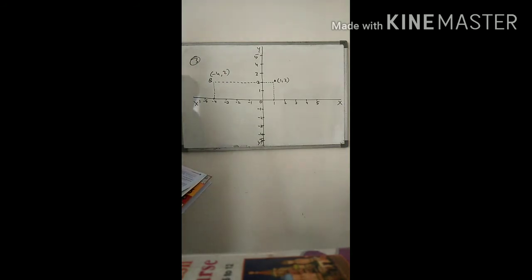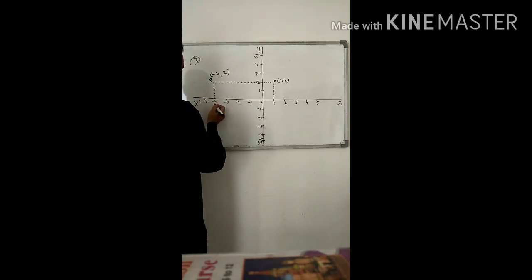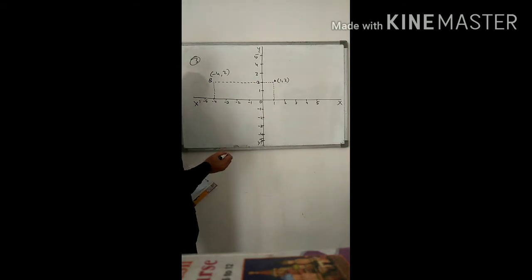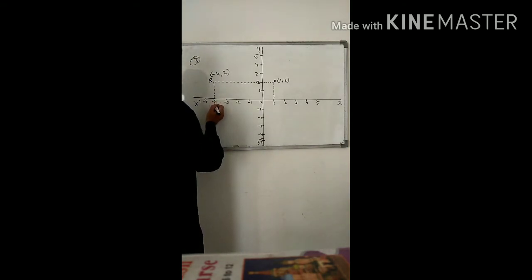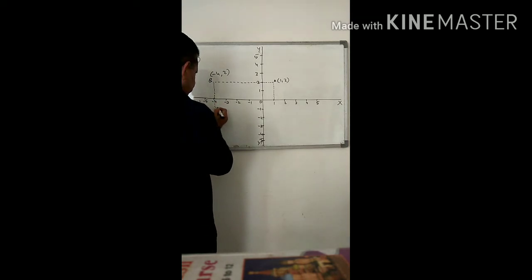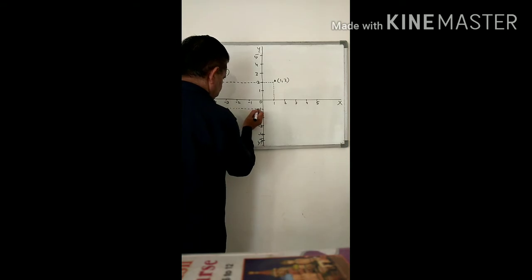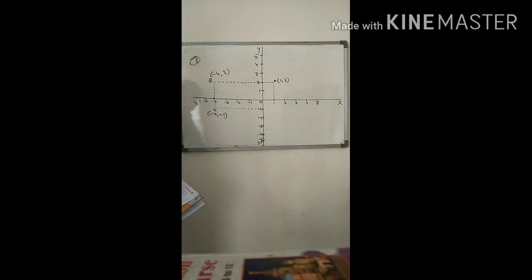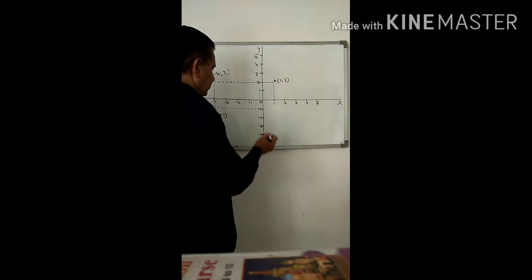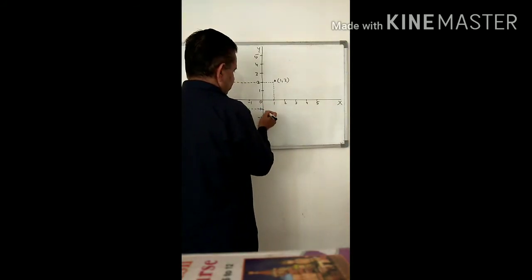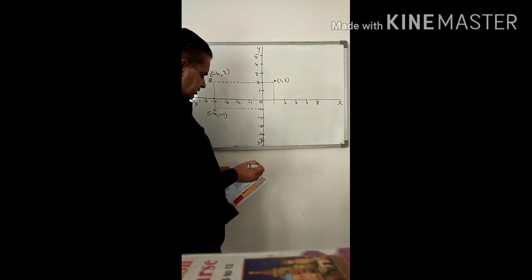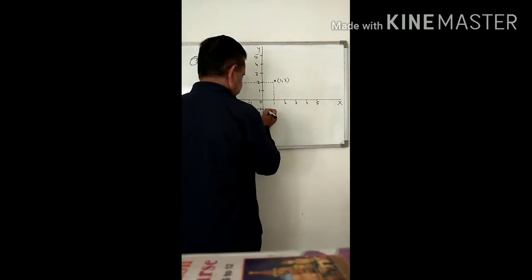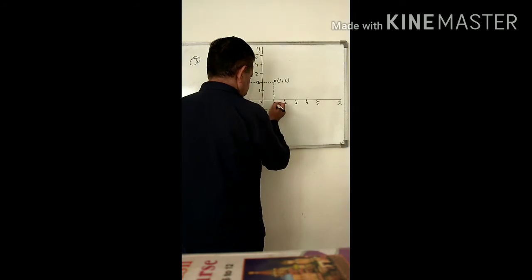C point: minus 4, minus 1. Minus 4 and minus 1 — this is in the third quadrant. D point: d equals 1 and y equals minus 1. D point: 1 and minus 1.